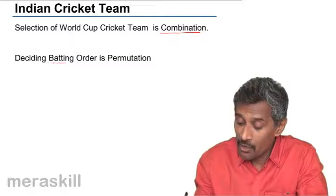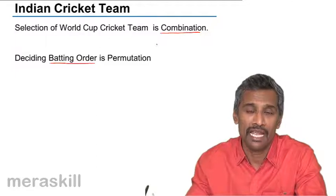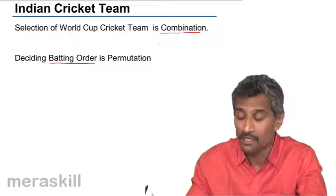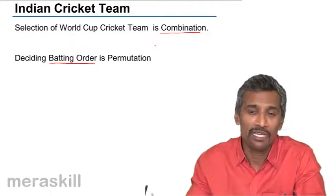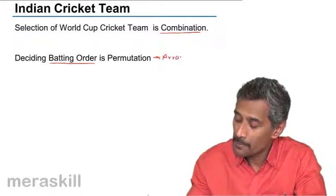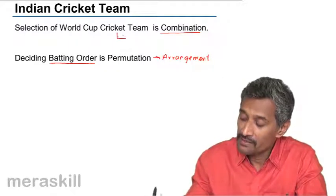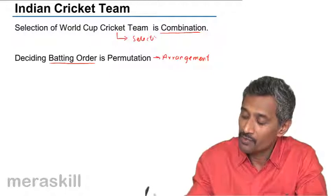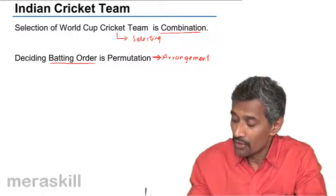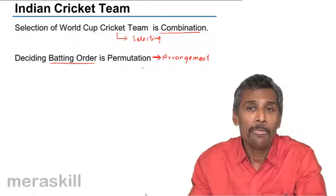But deciding the batting order is a permutation, because the order in which players bat — whether A goes first and then B follows, or the tail-ender goes first — makes a difference. The arrangement of the order is important. Selecting the team is combination; the batting order is permutation.